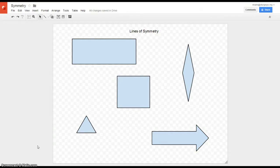So first of all, what is a line of symmetry? A line of symmetry is a line that can be drawn through the center of a shape, and when folded on that line, the two parts are going to be exactly the same.